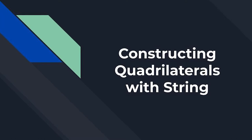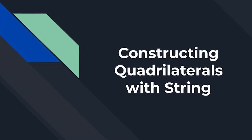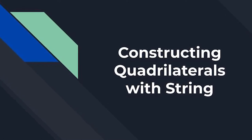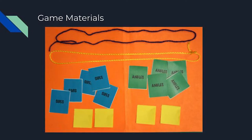The game we are playing today is called Constructing Quadrilaterals with String using side and angle property cards. Your goal is to accurately create quadrilaterals with string that satisfy the properties.